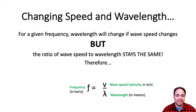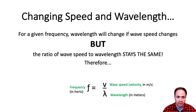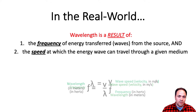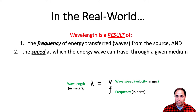For a given frequency, a set number of waves pass by each second. If wave speed changes, wavelength must also change so the same number of waves still pass each second. The ratio of wave speed to wavelength stays constant for a given frequency. Formally: frequency (in hertz) equals wave velocity (in meters per second) divided by wavelength (in meters). However, since frequency is actually set by the source, it's better written as: wavelength equals velocity divided by frequency.